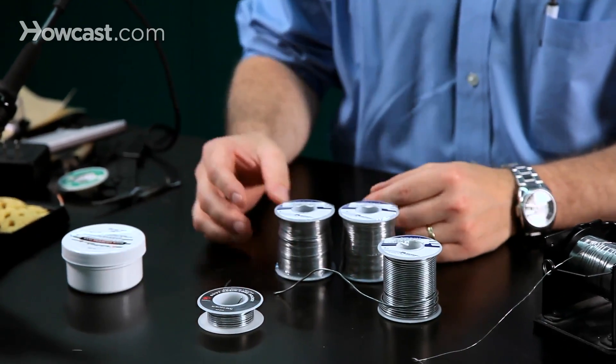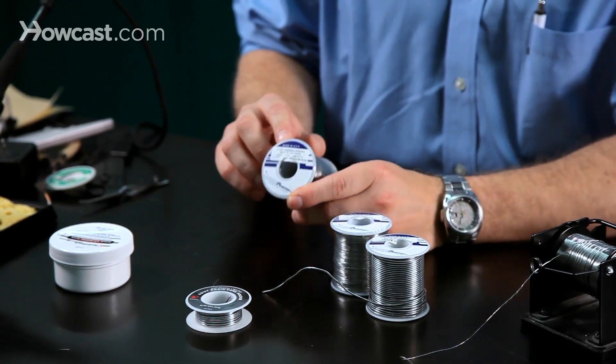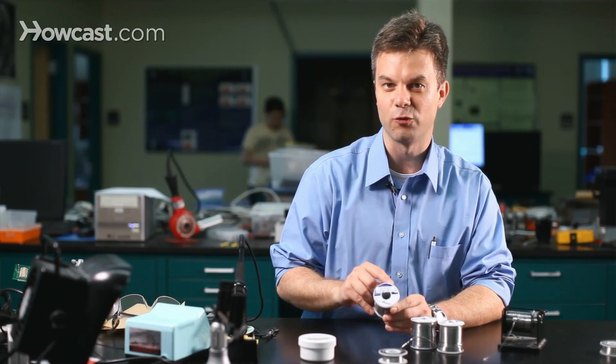There's some slightly different formulations of solder that are commonly encountered in electronics. A non-eutectic solder, such as 60-40, which is 60% tin and 40% lead, has a slightly higher melting point, something around 370 degrees Fahrenheit.